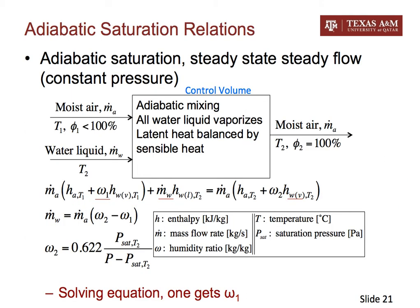On the previous slide we showed the dry bulb and wet bulb thermometer idea — an actual technology used for many years to measure relative humidity. This actual process can be approximated using the so-called adiabatic saturation process. The adiabatic saturation process is a steady-state, steady-flow, constant-pressure process. We consider a control volume in which this process happens.